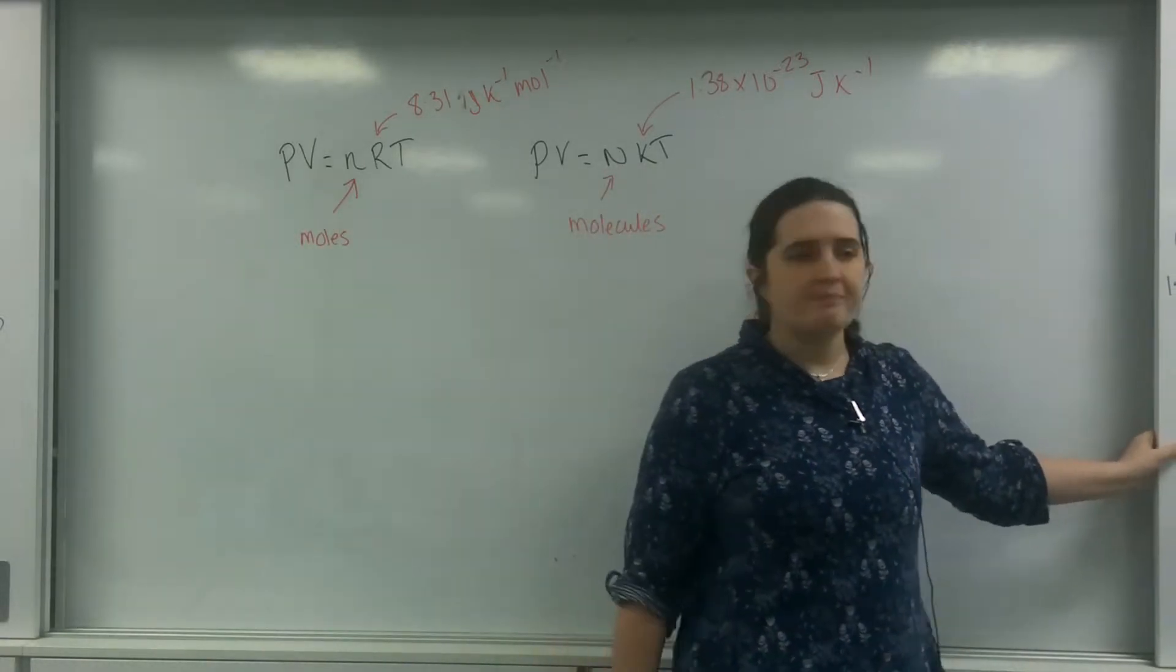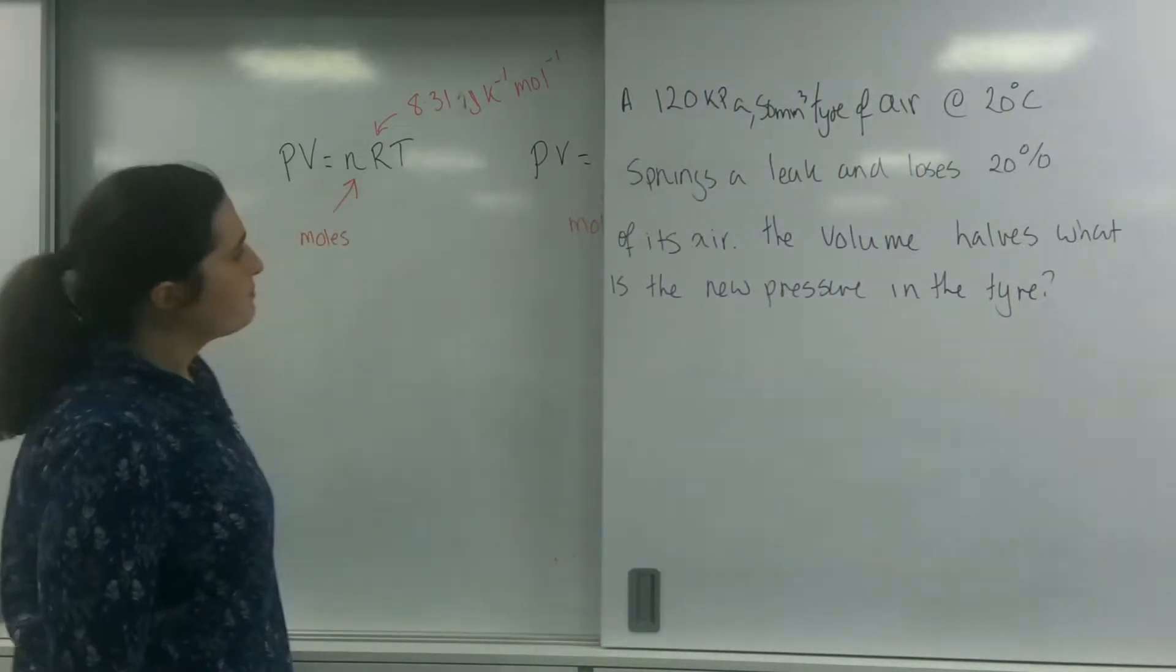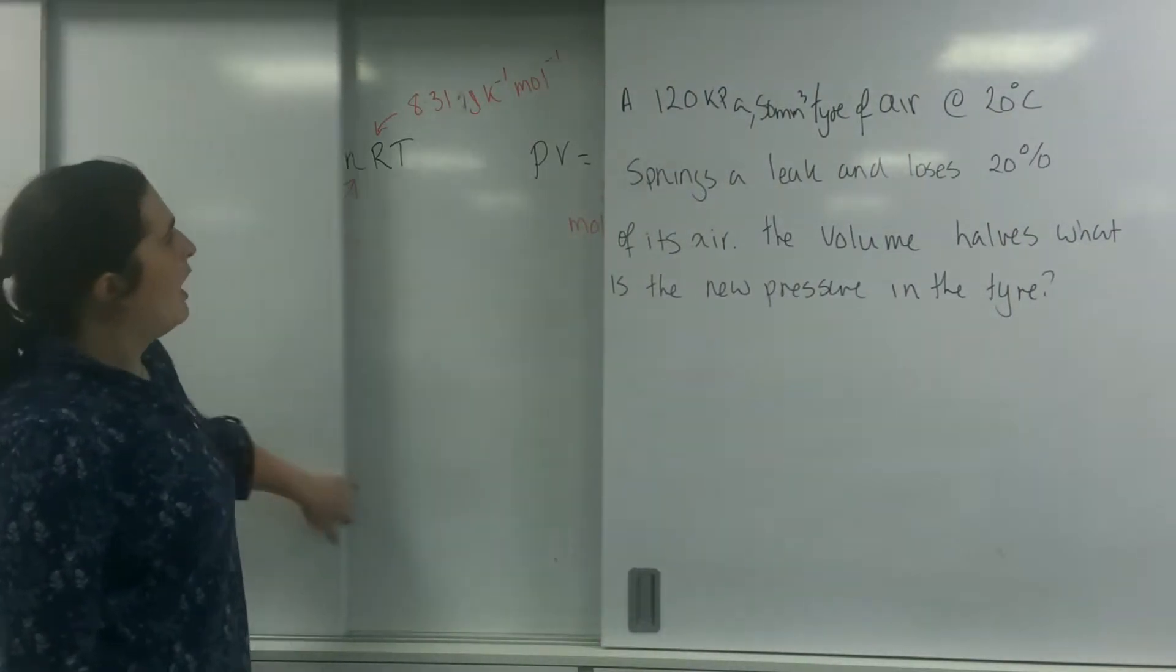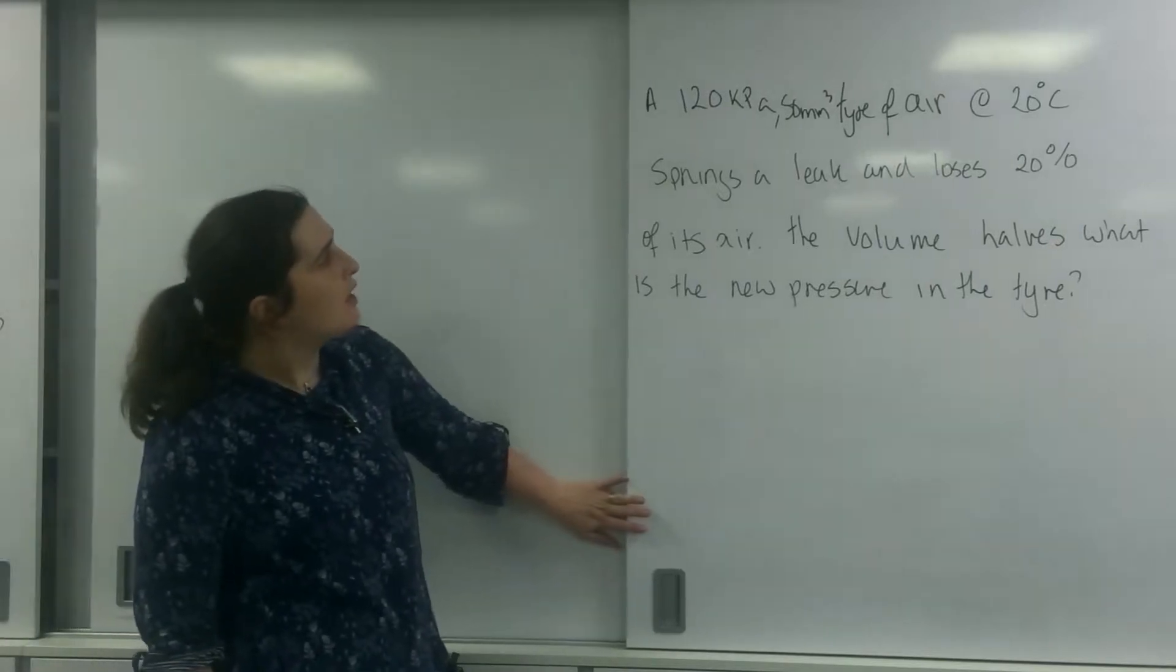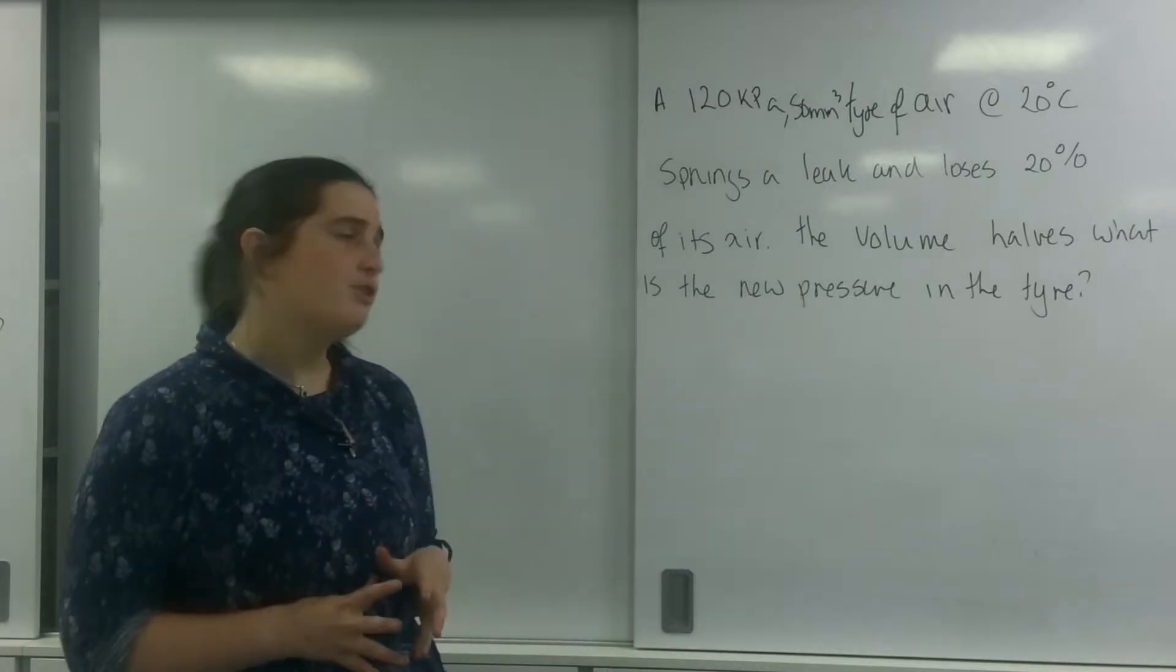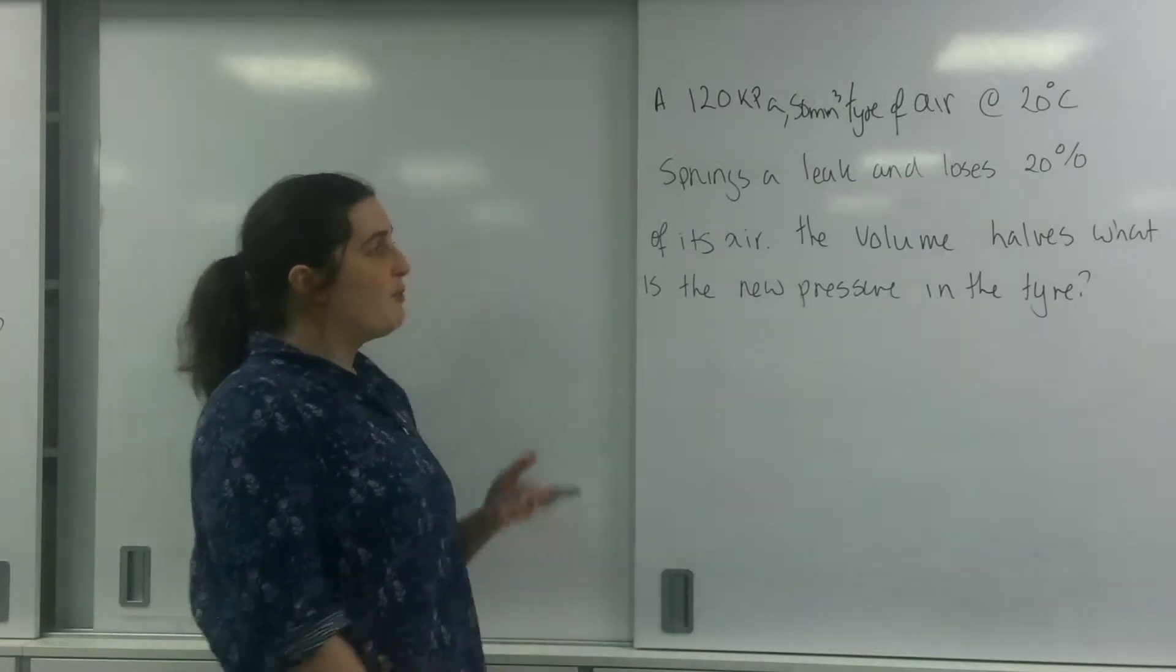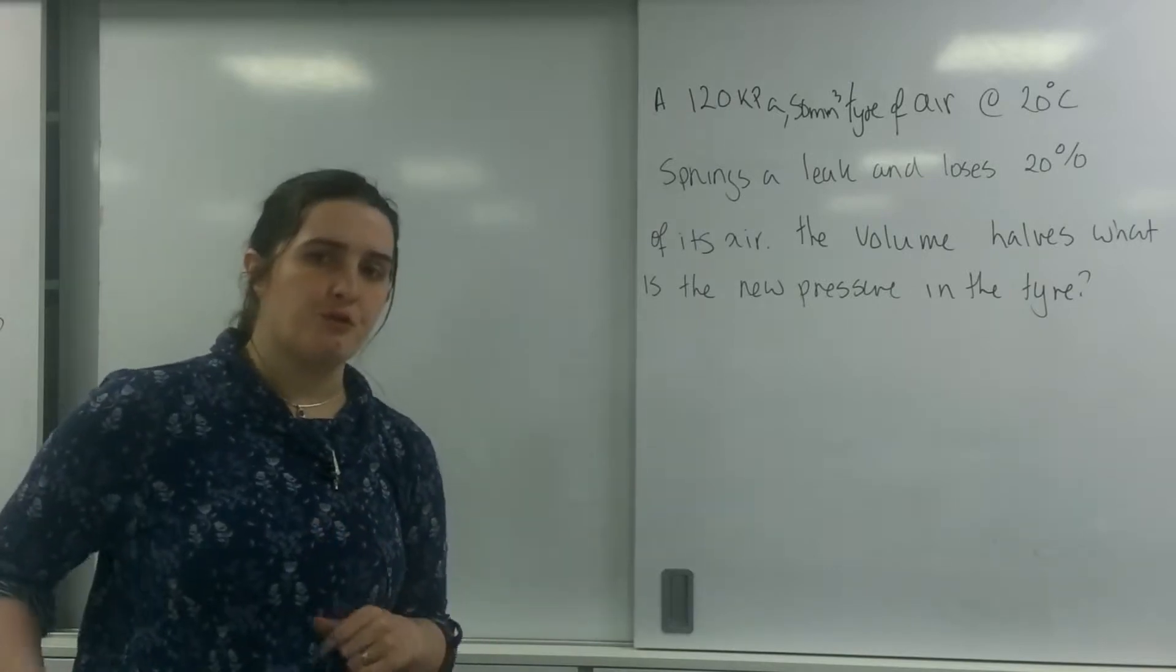So I'm going to give you a question. To start with, I have a 120 kilopascals, 50 millimeter cubed tire of air at 20 degrees Celsius. It springs a leak and loses 20% of its air. The volume halves. What would be the new pressure in the tire?